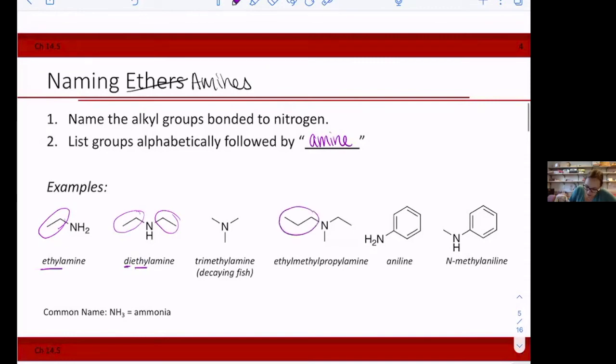In this particular molecule, you have a propyl, you have an ethyl, and you have a methyl. So I'm going to name each of those three groups in ABC order. So we'd have ethyl methylpropyl amine.